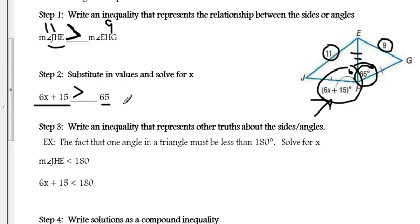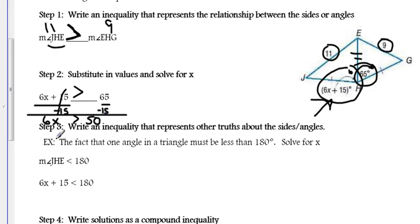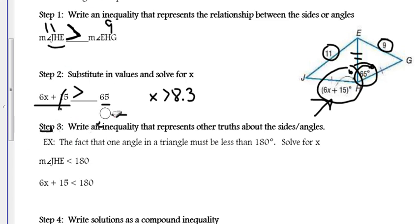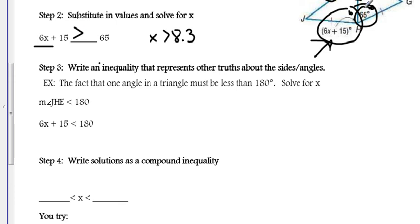Solving the inequality, subtract 15 from both sides: 6X is greater than 50. Divide both sides by 6: X is greater than 50 divided by 6, which is approximately 8.3. So from the hinge theorem, X has to be greater than 8.3.